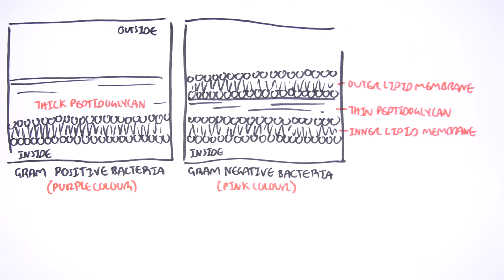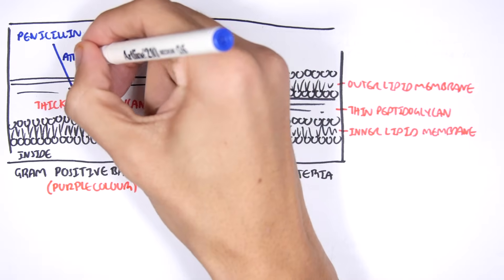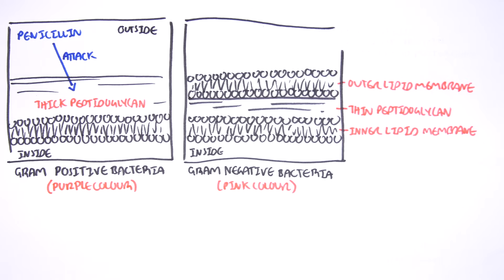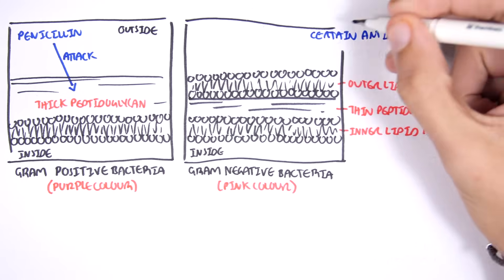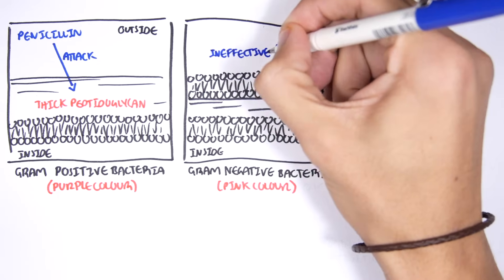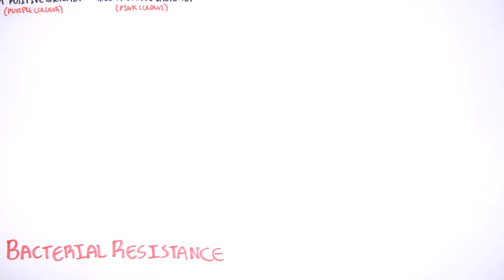Gram-negative bacteria already have some form of resistance to penicillin because penicillin targets proteins within the peptidoglycan layer. Therefore, penicillin is very effective against gram-positive bacteria because the peptidoglycan layer is thick and it's the outermost layer. However, penicillin is not very effective against gram-negative bacteria because there is an outer lipid membrane in the way and the peptidoglycan layer is quite thin.